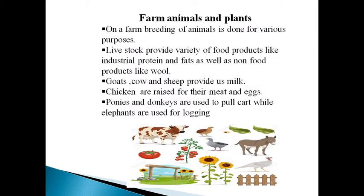Farm Animals and Plants. On a farm, breeding of animals is done for different purposes. Livestock provide a variety of food products like industrial protein and fats, and non-food products like pharmaceutical products, leather, and wool.